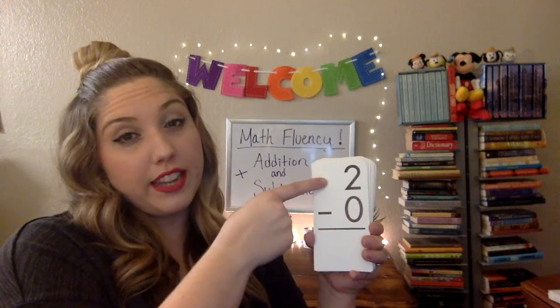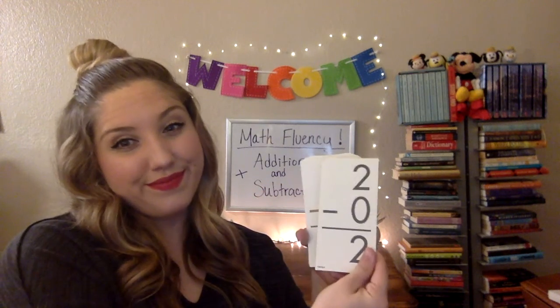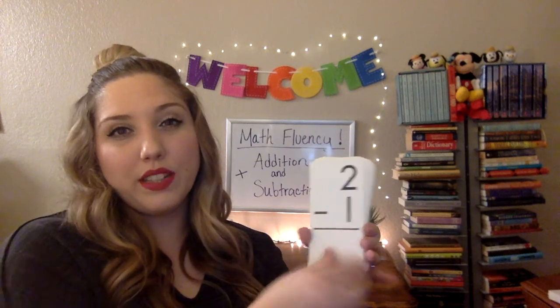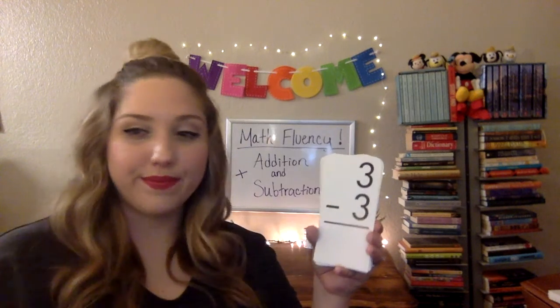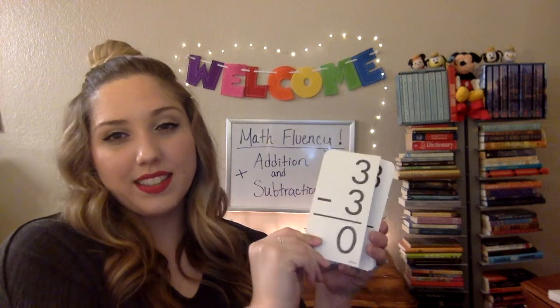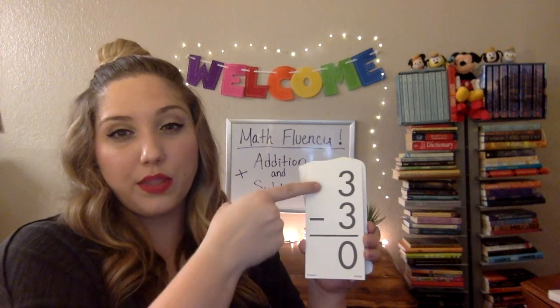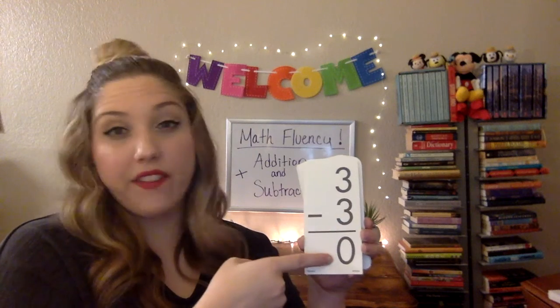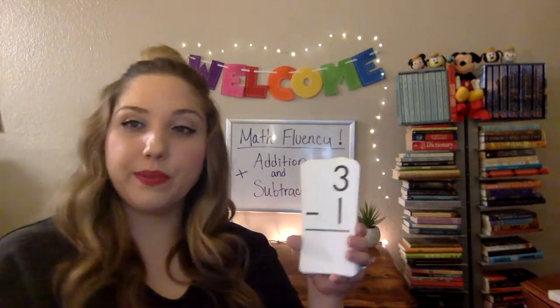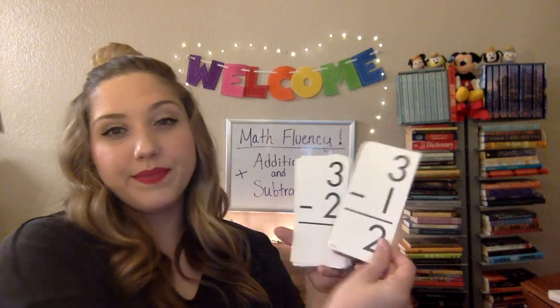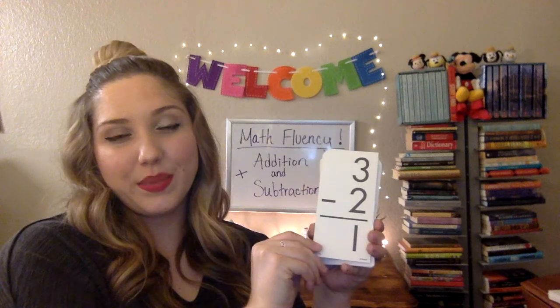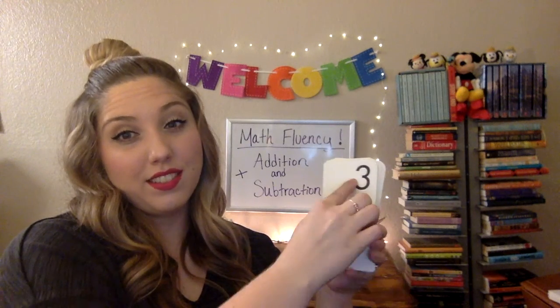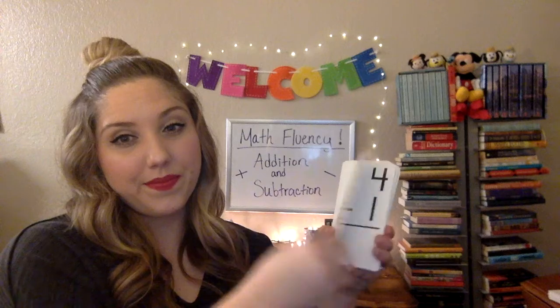2 minus 0 is 2. 2 minus 1 is 1. 2 minus 2 is 0. 3 minus 3 is 0 — if we're taking away the same number, we're not going to have any left, the answer is 0. 3 minus 1 is 2. 3 minus 2 is 1. 3 minus 0 is 3 — the number on top stays the same.